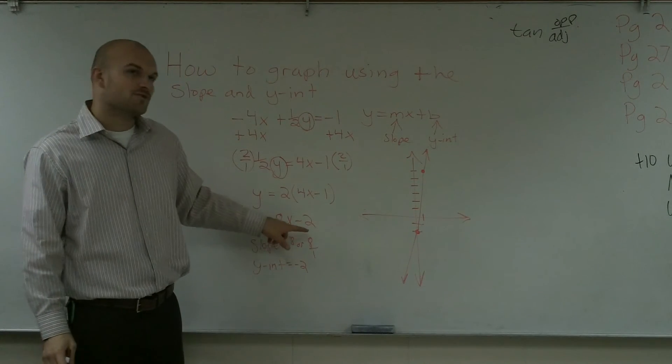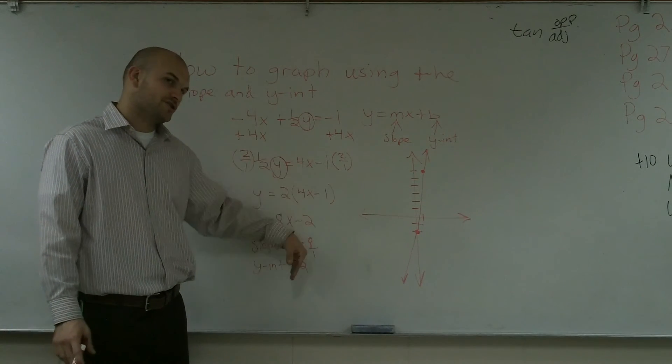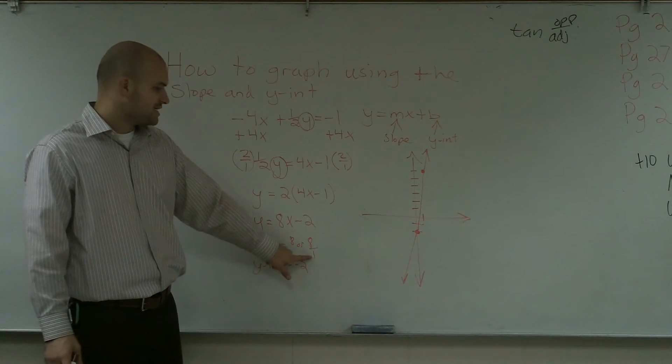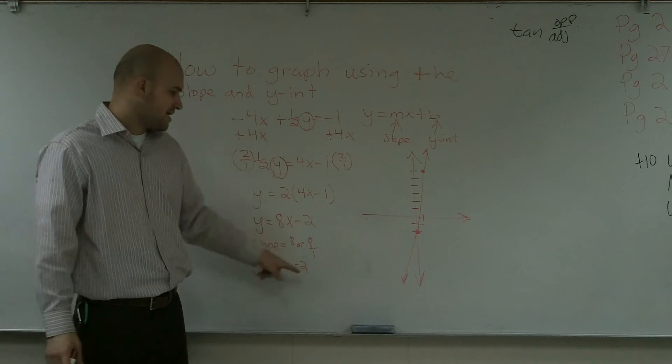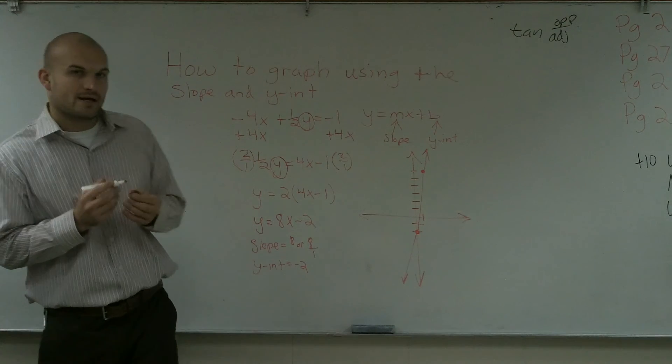Remember that when your slope, when your change of y is positive, that tells you to go up. And when it's negative, that tells you to go down. And when my change in x is positive, that tells me to go to the right. And when it's negative, that tells me to go to the left. So this is how you graph using the slope and y-intercept.